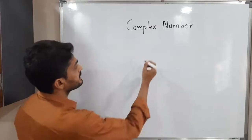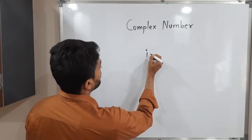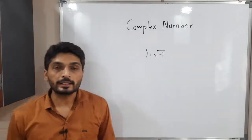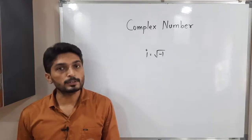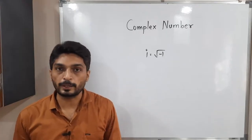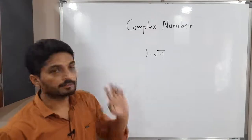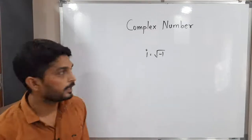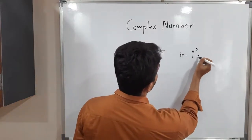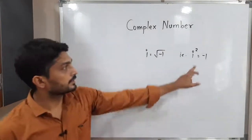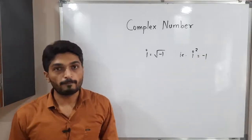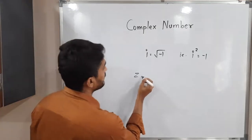We start the concept of complex numbers with i, where i is equal to the square root of minus one. In a real number system it is not possible to find the square root of any negative number, but in complex numbers it is quite possible since we define i in this way. The same thing can be written as i squared is equal to minus one.